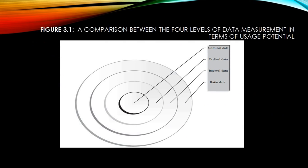Looking at the spectrum of applications, the lowest usage potential is for nominal data — it's just for recognition, just for labeling. The second level is ordinal data, which is nothing but ranking. Interval data talks about the gap between two values, and ratio data talks about the ratio between two values. One very interesting thing to remember: ratio scale is about measuring, not counting.